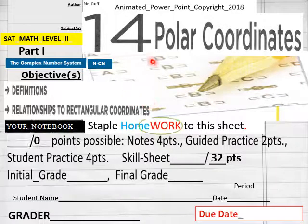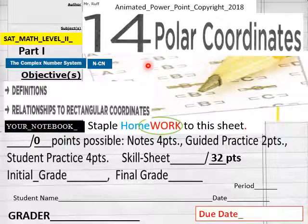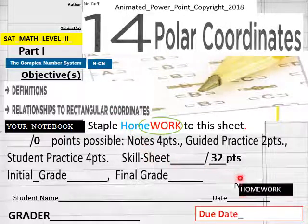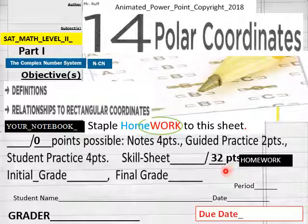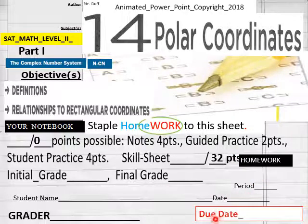And for 14 homework is polar coordinates. You've got 32 points here on your homework sheet. Have those out so I'm going to go over them together. Name, date, period, students, make sure you do that. Due date for my onliners, homeschoolers.